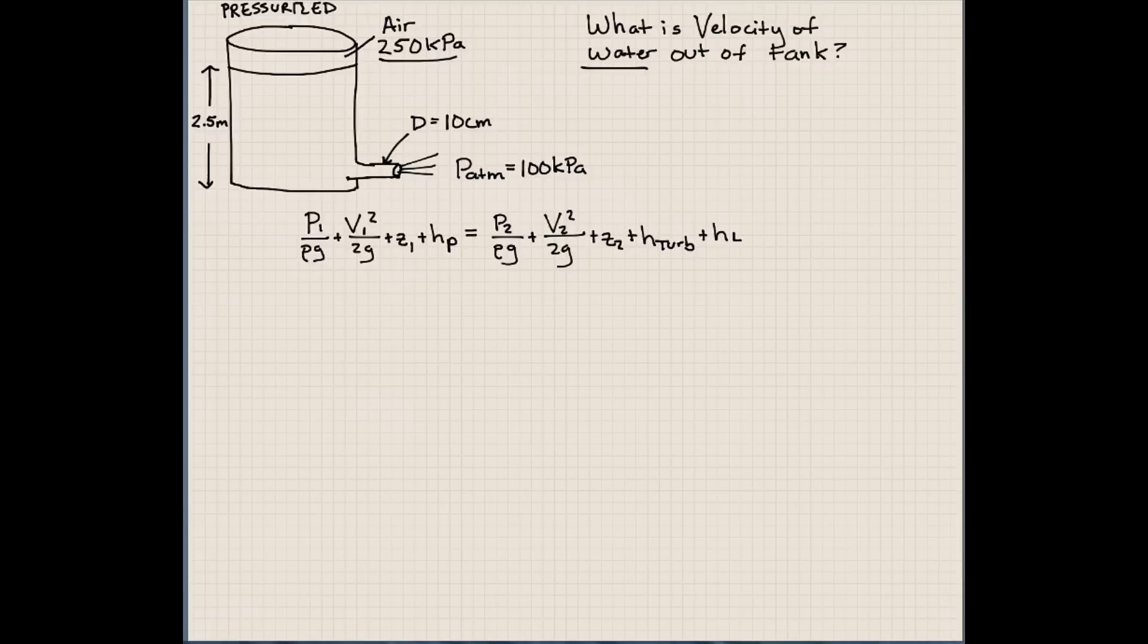So at pressure 1, we do have a pressure 1. We can't cancel that out. Velocity at 1. Now this is an interesting note that we're going to make. We're going to say the velocity here. First thing we need to do is we need to pick our points. I'm going to pick my point 1 right at the surface of this water. And point 2 right at the exit here of the stream.